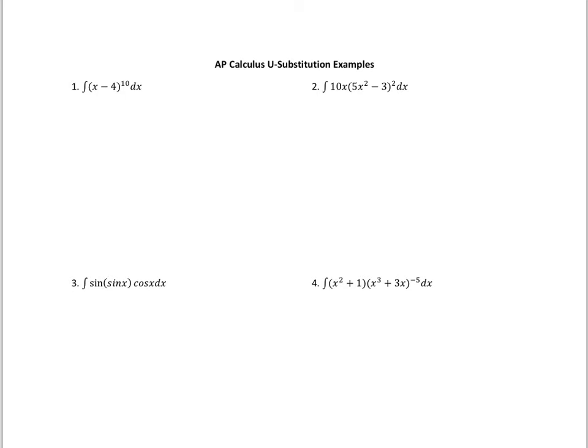On this first one, we have the integral of x minus 4 to the 10th dx. For this one, it's pretty basic as to what we're going to let u equal — we're always going to look for the most complex thing. So in this case, we're going to let u equal x minus 4. We take the derivative of each side: du equals dx.